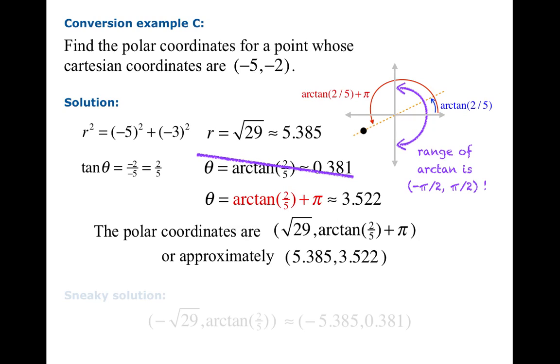Now there's a sneaky solution which is you could have used arctan(2/5) but instead of moving out √29 you could have moved backwards √29. In other words you could have used -√29. That would have worked also. Now we sort of frown on this because typically you don't want someone to work hard and go backwards with r. So you want to choose polar coordinates so that r is positive. That's usually what one does in polite company mathematically.